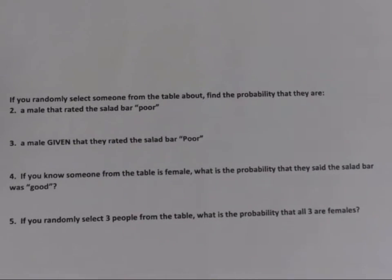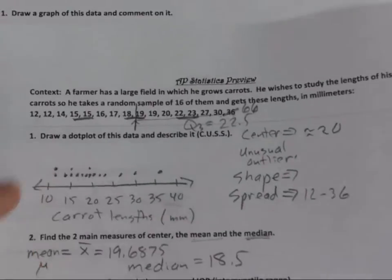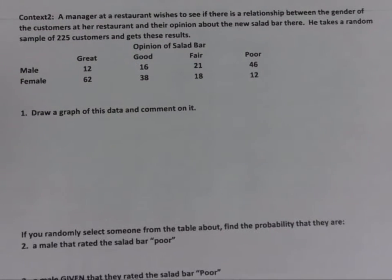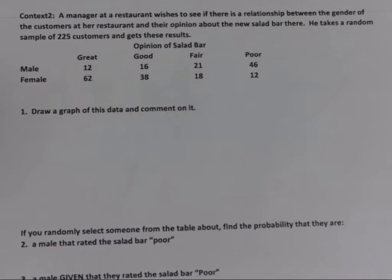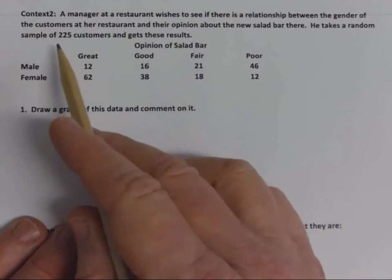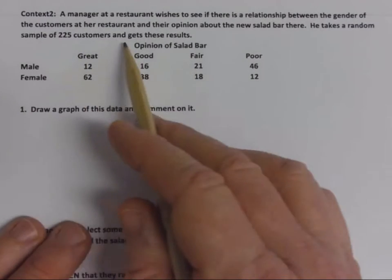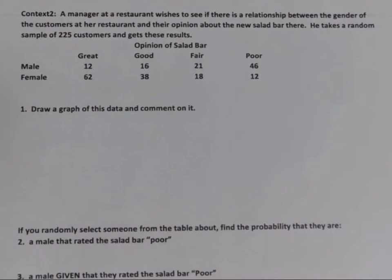The other thing I wanted to talk about in this video is categorical data. With quantitative data we've covered what you need to do. Categorical data is something that categorizes — the numbers are counts in categories, and they can't be decimals like they typically can be with quantitative data. The manager of a restaurant wishes to see if there is a relationship between the gender of customers and their opinion about the new salad bar. She takes a random sample of 225 customers. This is what we call a two-way table.